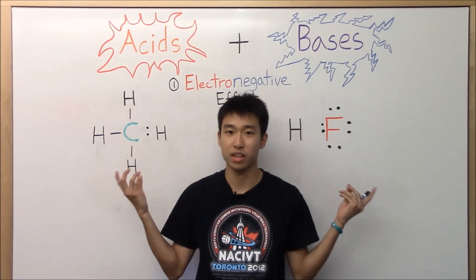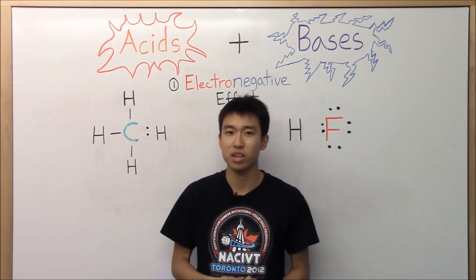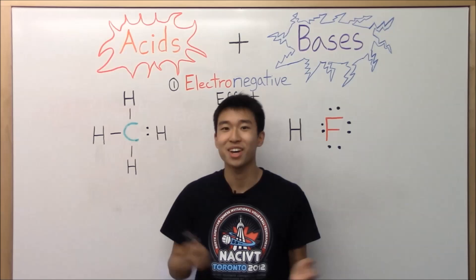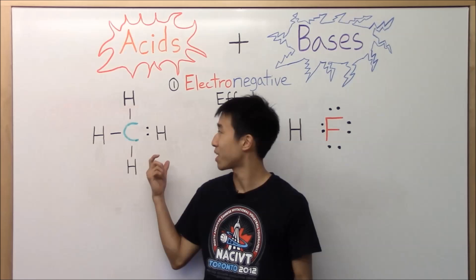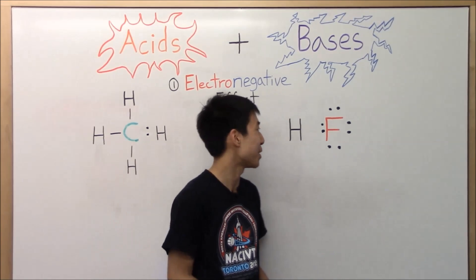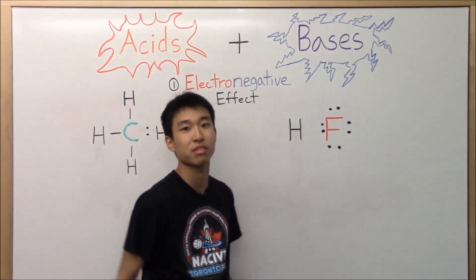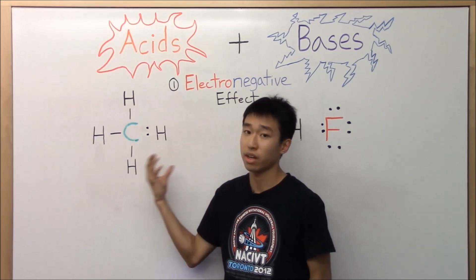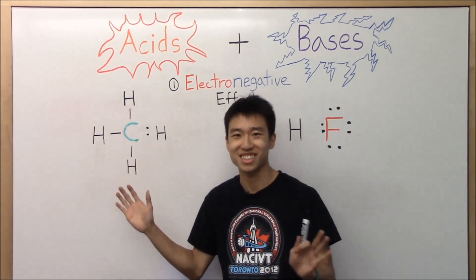So now that you guys know that the electrons in the bond actually look like that — which one do you think is the stronger acid? Hopefully you guys said that HF is actually the stronger acid, because it is. And methane, or CH4, is the weaker acid. Because the electrons are pulled over, the hydrogen is so loose I can basically just click it right off. And the electrons are shared more evenly between carbon and hydrogen, so they have a firmer, stronger bond, making it a weaker acid.